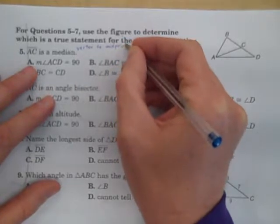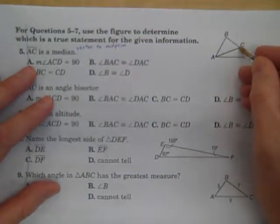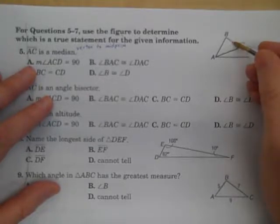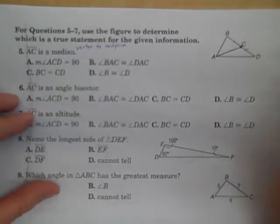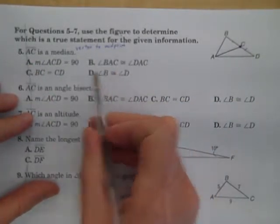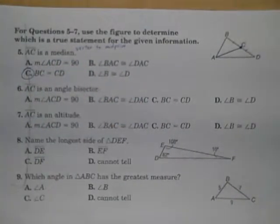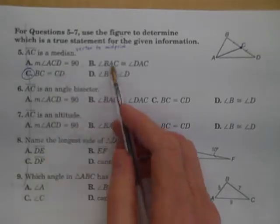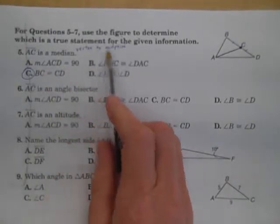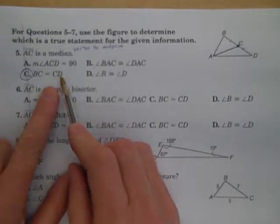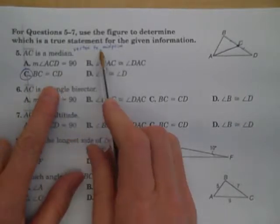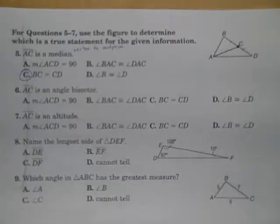Well, let's look at the triangle. If C is the midpoint, then BC and CD are congruent. So BC is equal to CD. This is the only thing that is true, well, not the only thing that is true, but it's the only thing we can absolutely say is true if AC is a median.